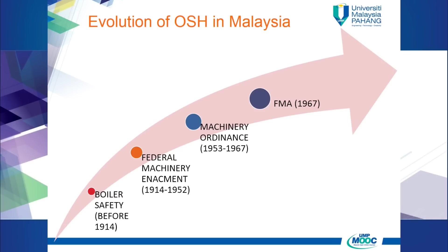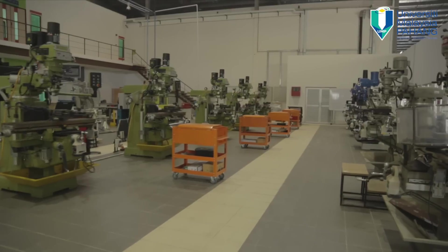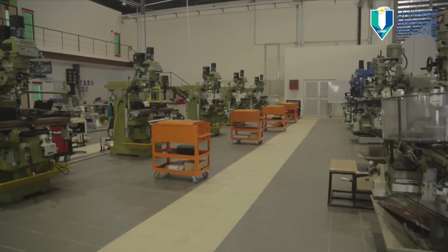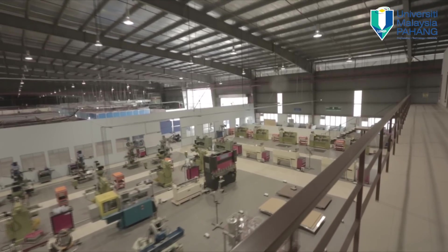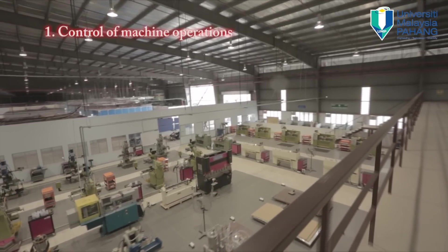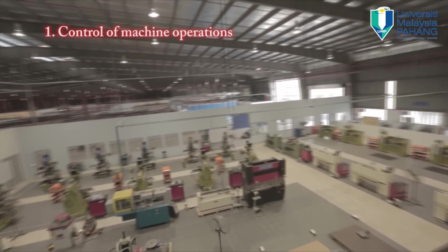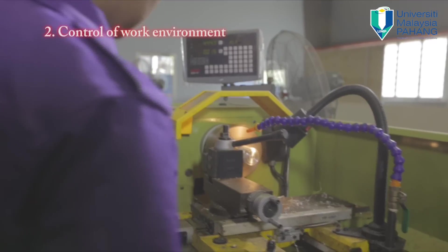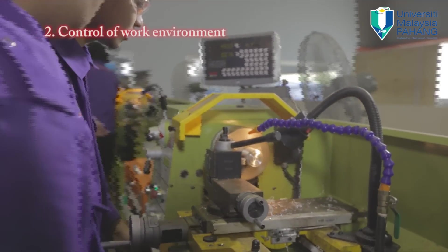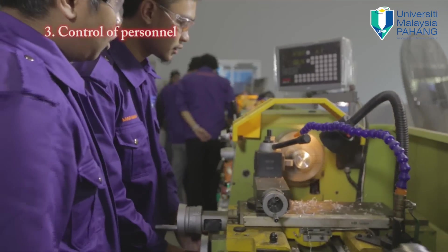In 1967, Factories and Machinery Act (FMA) 1967 was approved by Parliament. FMA 1967 was developed to further expand the provisions of machinery safety and improve weaknesses that existed in the Machinery Ordinance 1953.